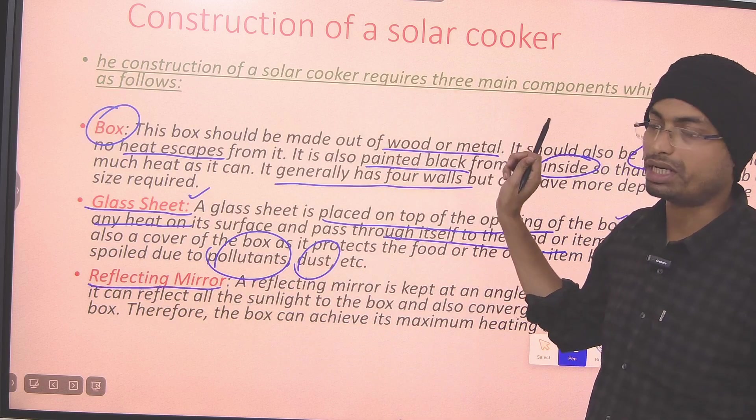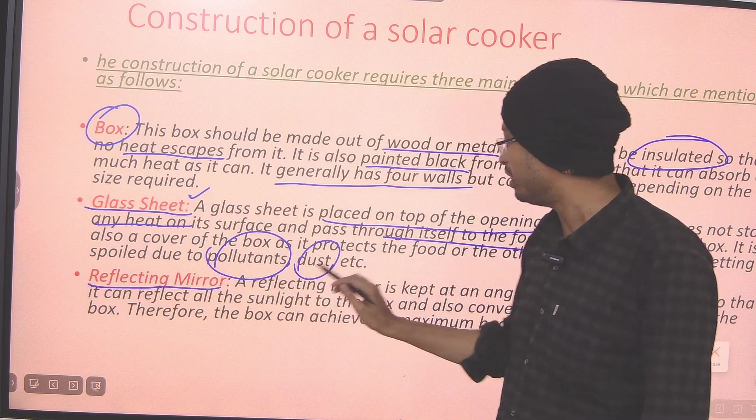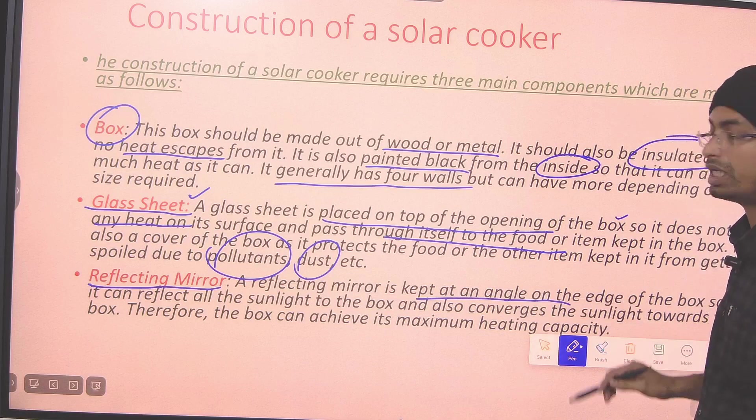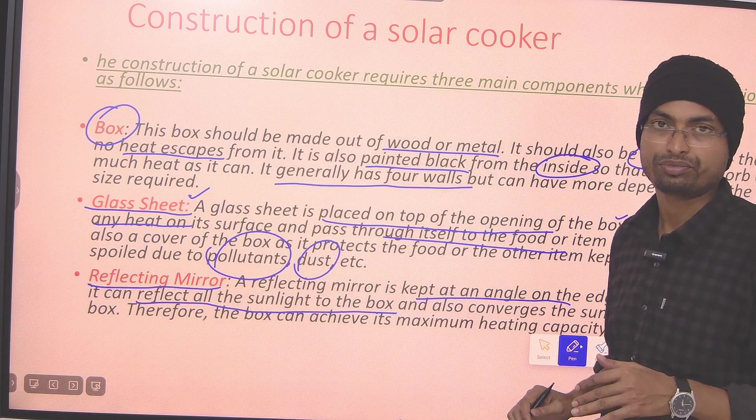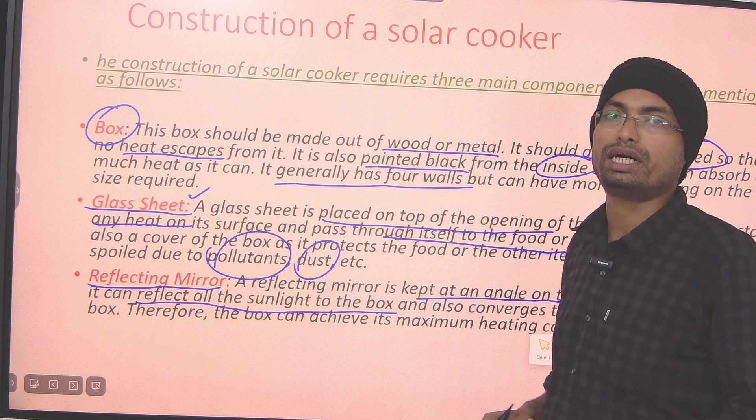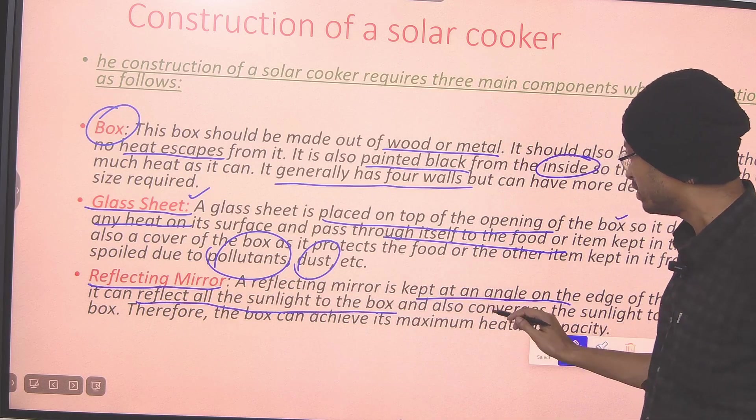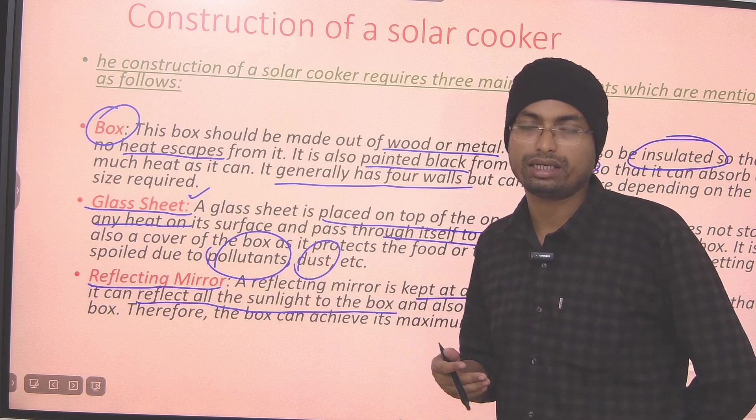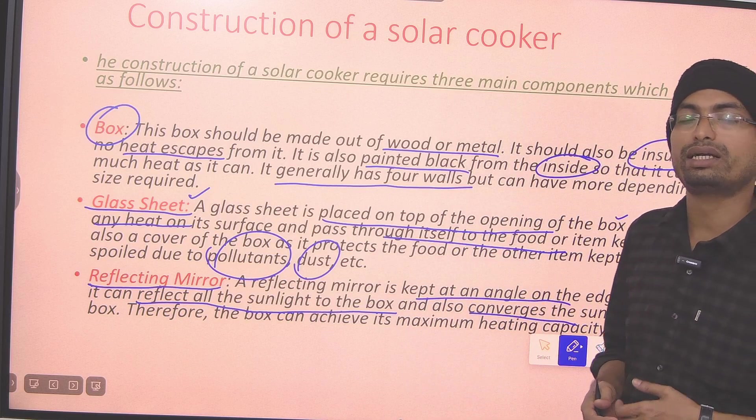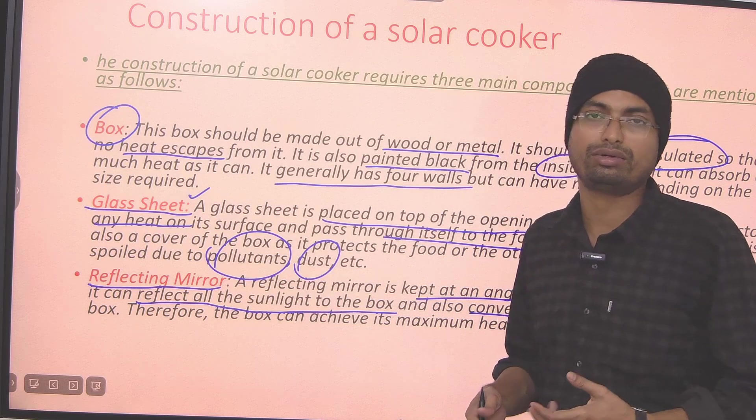Again, the reflecting mirror. We have seen this in the figure. The reflecting mirror is maintained at an angle such that it will reflect the sunlight and then direct it into the box. Then, the rays will converge. And the temperature will rise gradually. And the temperature will rise so much that after a period of time, whatever you cook, it will be done easily.